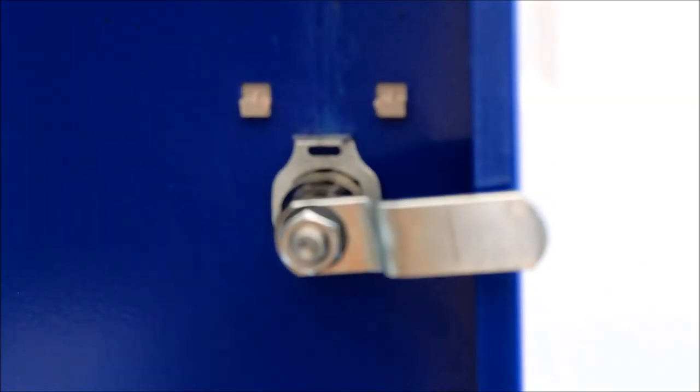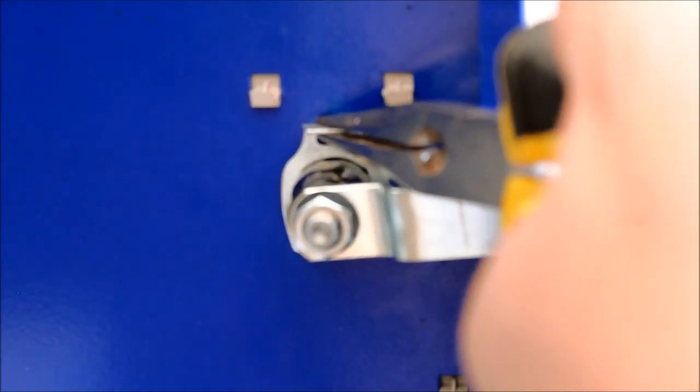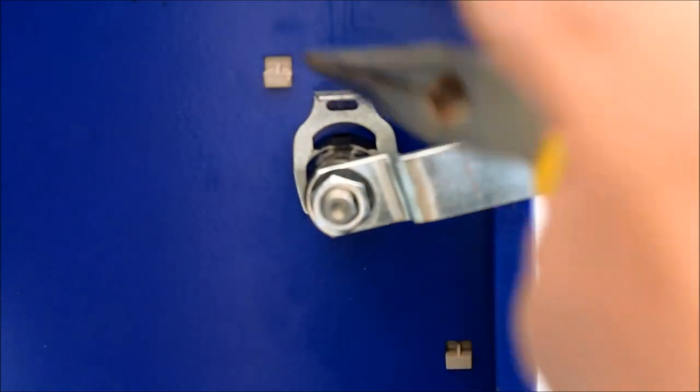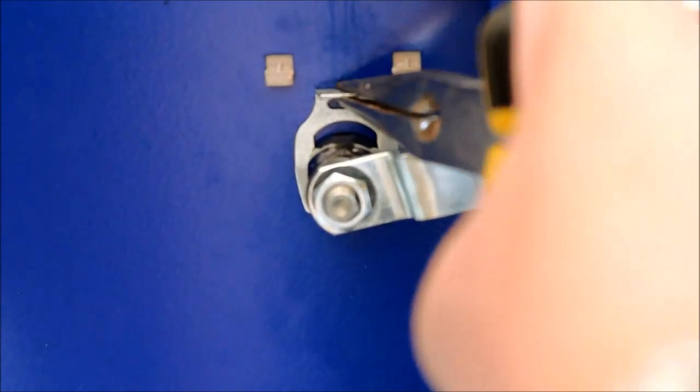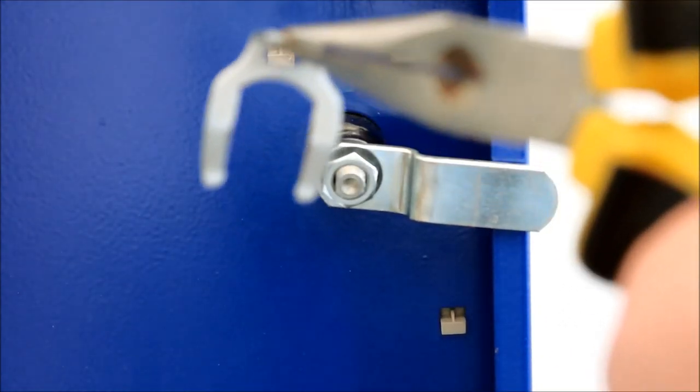Now to change this, we simply put the pliers, attach the pliers to the little lip at the bottom and you tap. Easier when you're not videoing it, but you just tap the underneath until that comes free.